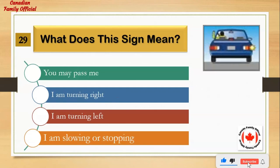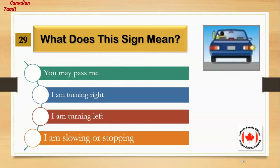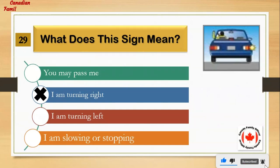What does this sign mean? Number 1: you may pass me. Number 2: I am turning right. Number 3: I am turning left. Number 4: I am slowing or stopping. And the answer is: I am turning right.